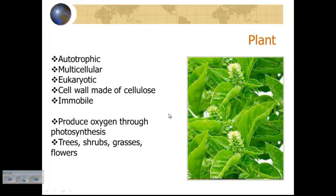Now here we are at the plant kingdom, or Plantae in Latin. Plants must be autotrophic — they feed themselves through photosynthesis. They are multicellular, made up of many cells, and cannot be unicellular. Eukaryotic — they have a nucleus in their cells. Their cell wall is made of cellulose, a polysaccharide — it's what paper is made out of. They are immobile, and they produce oxygen through photosynthesis while absorbing carbon dioxide from our atmosphere. We're talking about trees, shrubs, grasses, flowers, that sort of thing.